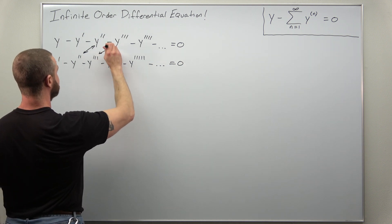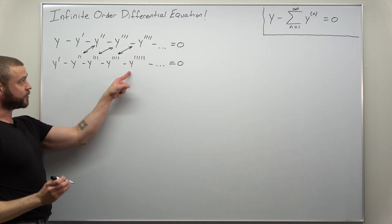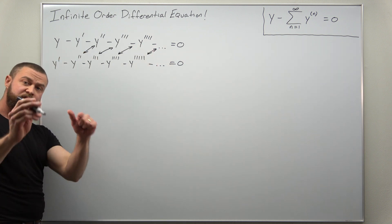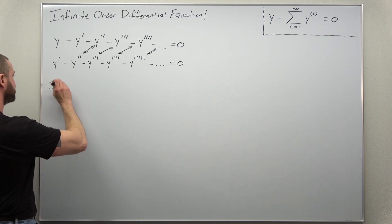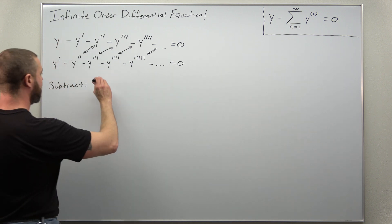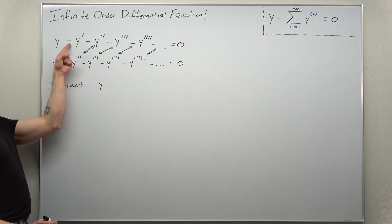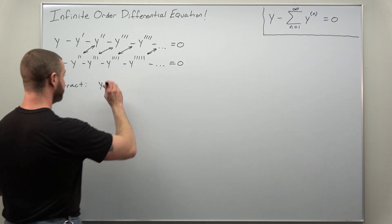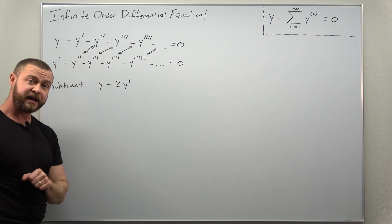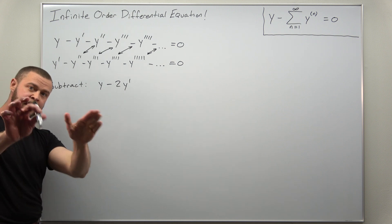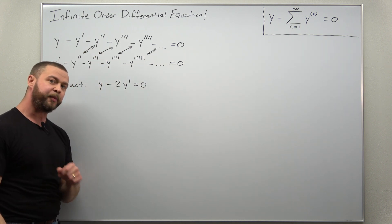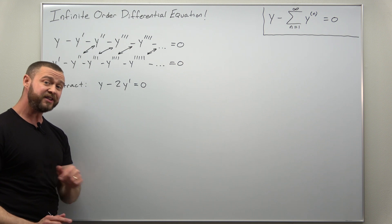Just be careful with your negatives occurring everywhere. Your fifth derivative is going to cancel out with what's buried in the rest of the terms. Taking the top equation and subtracting the bottom one, we have y, and then minus y prime minus y prime — those do not cancel, giving minus 2y prime. All other pairs cancel out, and we get 0 on the right-hand side. This is a very simple first-order ODE.